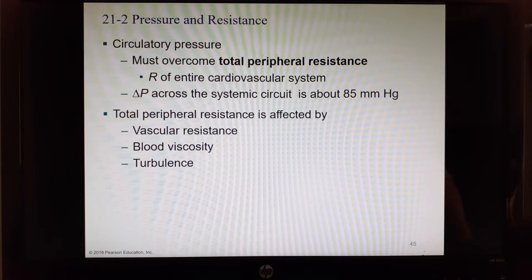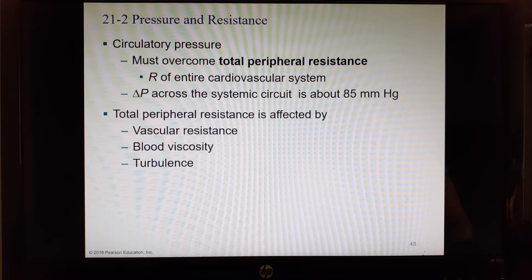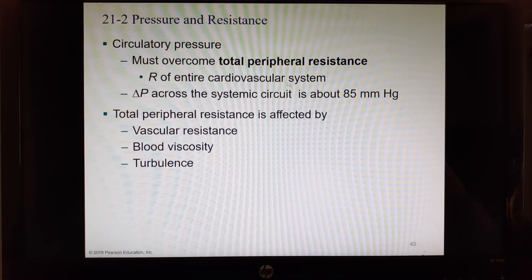Circulatory pressure must overcome total peripheral resistance—the resistance of the entire cardiovascular system. The change in pressure from its highest point to its lowest point is about 85 millimeters of mercury. We talked about total peripheral resistance. What is resistance? It would be resistance within each of the vessels, the thickness of the blood, and something we haven't really talked about yet called turbulence.